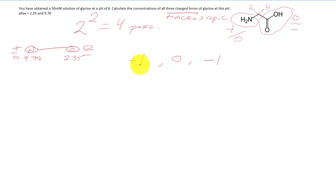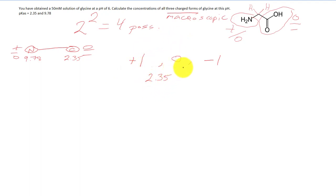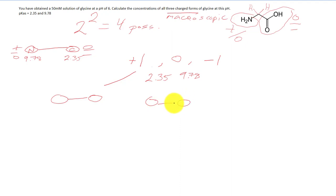The molecule switches from one charge state to another as we pass the pKa values. Starting at +1 and raising the pH, we first pass the carboxy pKa of 2.35, switching from +1 to 0. Then it switches from 0 to −1 at a pKa of 9.78. So those are our two transition points — as we pass each pKa, we flip from one charge state to the other.